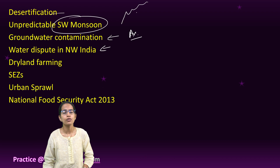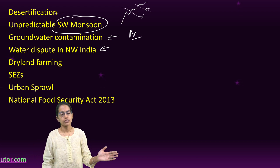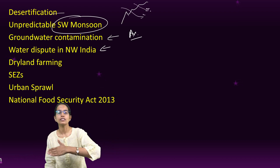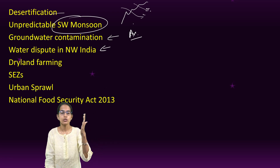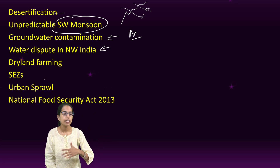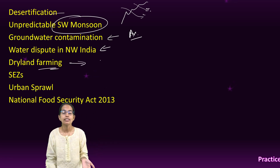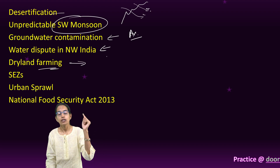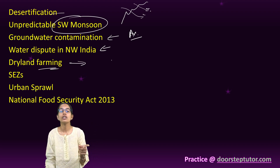The lowering of the Aravalli ranges and the passes created are leading to expansion of the Thar Desert from the western to the eastern side. Dryland farming and why it should be a good alternative in light of rising food insecurity in India were also covered.